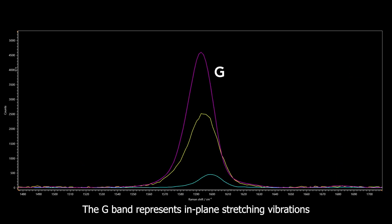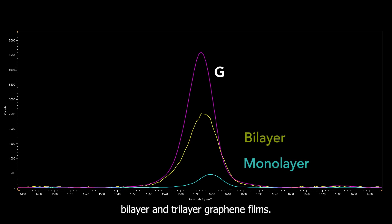The G band represents in-plane stretching vibrations within the SP2 bonded hexagonal lattice of graphene. The position and intensity of this band indicate the number of layers present in the sample as is shown in spectra of monolayer, bilayer and trilayer graphene films.